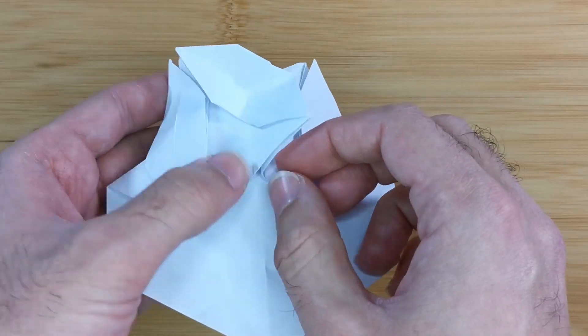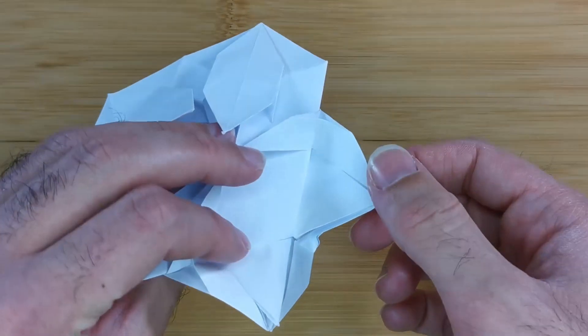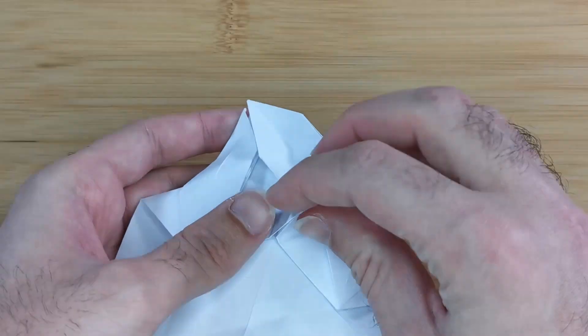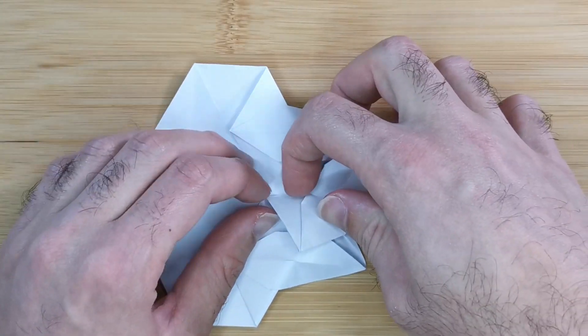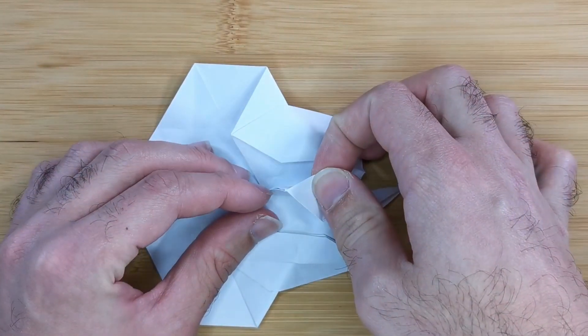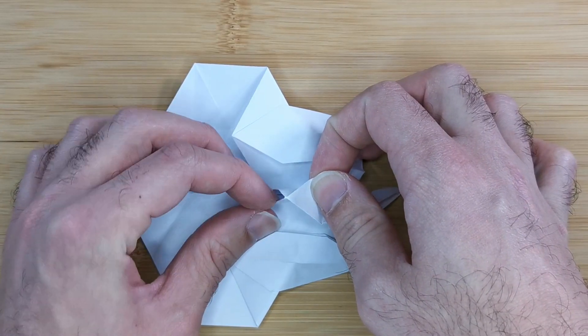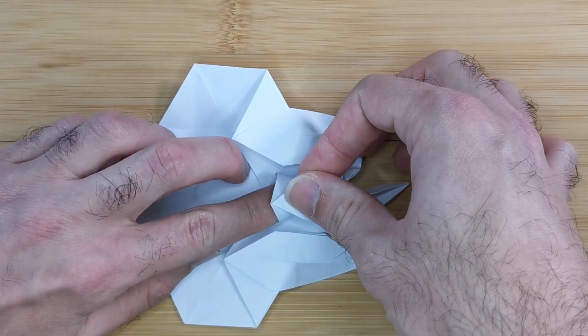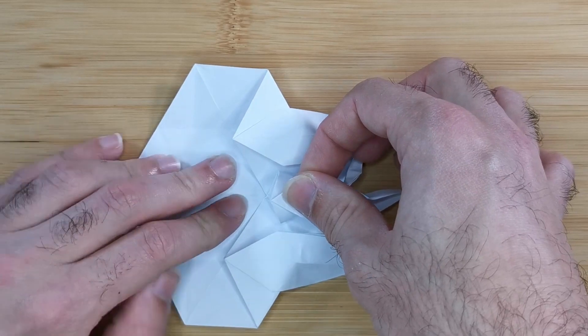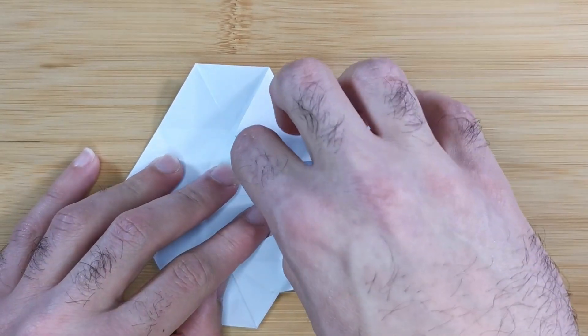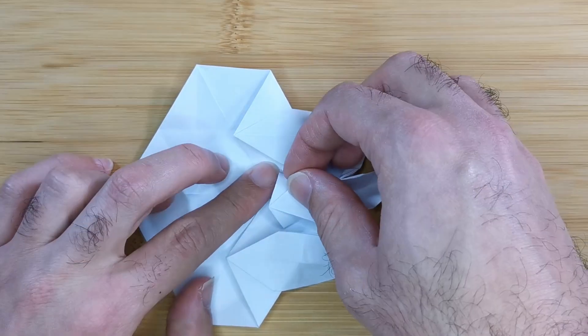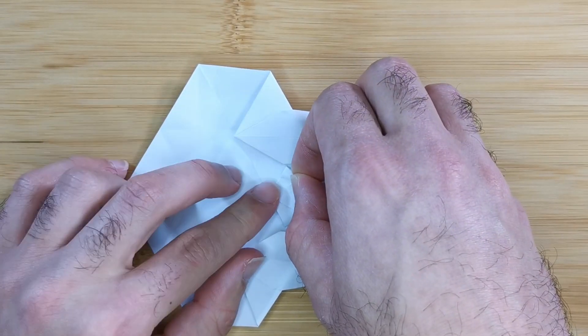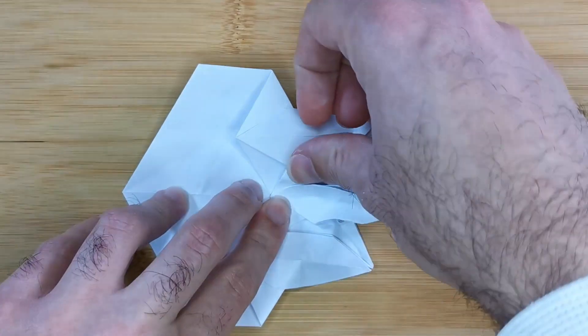Now I'm just trying to straighten out my branch here so it looks more symmetrical. And insert your finger into this pocket here and squash fold symmetrically bringing the bottom tip of that branch to the center of the model.